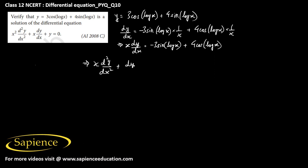That will be equal to d by dx of this, so this will be minus 3 cos of log x into 1 by x minus 4 sine of log x into 1 by x.